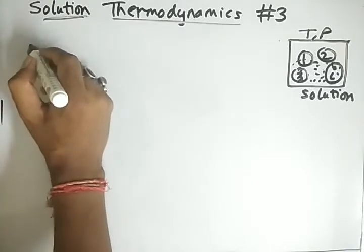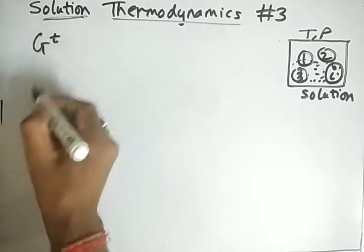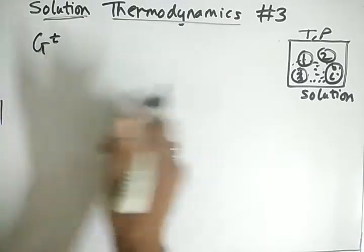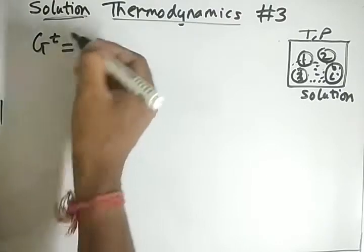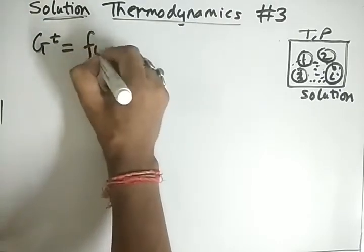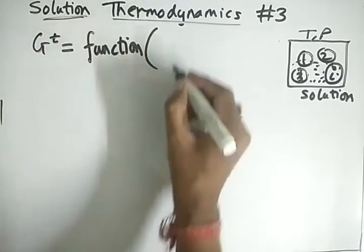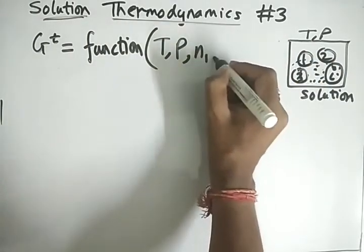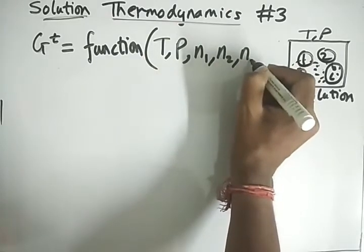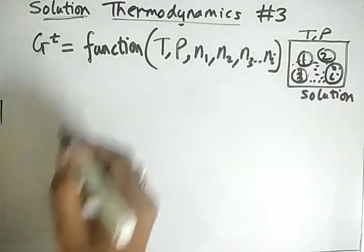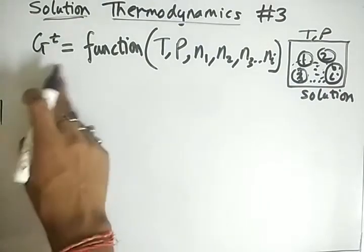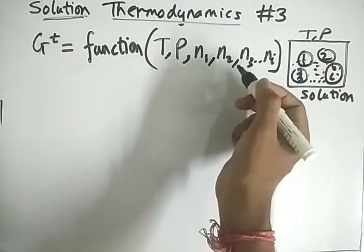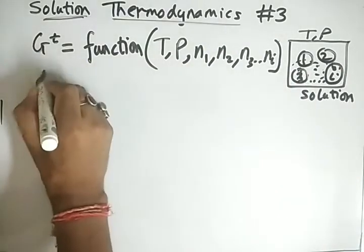The Gibbs energy for this system — the total Gibbs energy Gt, written as the total property — is a function of temperature, pressure, and the moles of the various compounds n1, n2, n3, up to ni. The total Gibbs energy would change if temperature, pressure, or the moles of any compound changes. Hence we can write dGt equals VdP minus SdT plus additional terms.